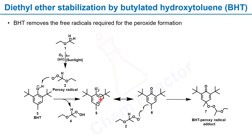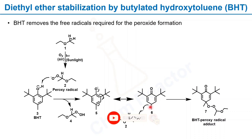This BHT radical rearranges to an intermediate, which has a more accessible radical away from the two tert-butyl groups. This BHT radical then reacts and forms a bond with another peroxy radical of diethyl ether, giving a BHT-peroxy radical adduct. In total, this quenches two peroxy radicals from diethyl ether and stops the chain reaction of peroxide formation.